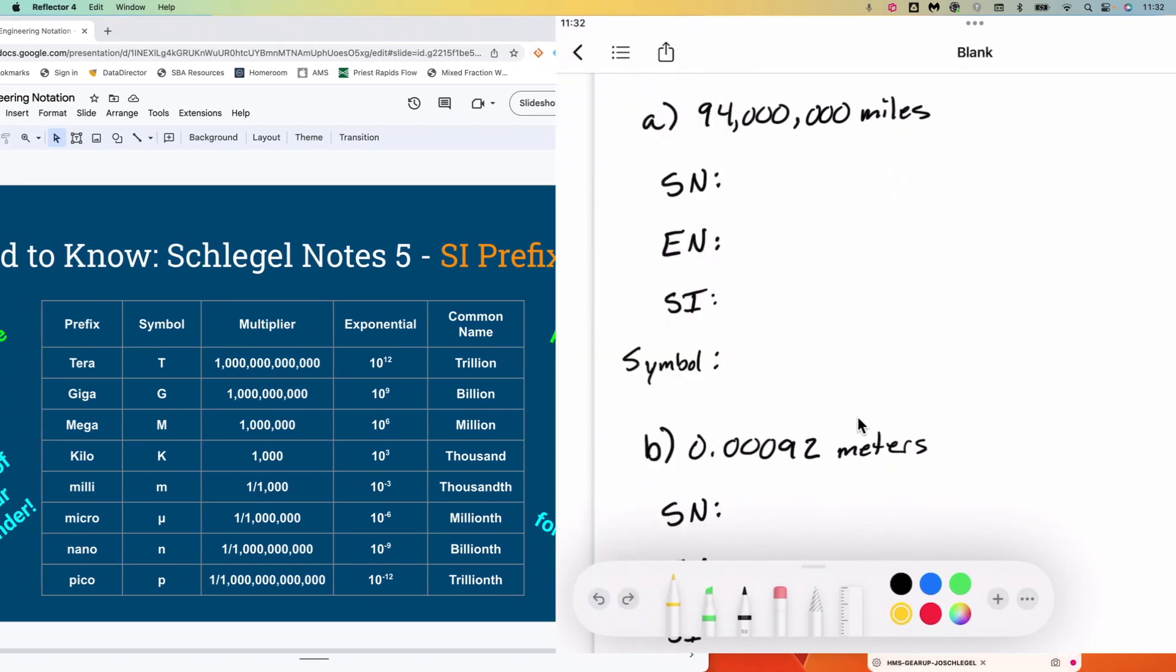Starting off here, we've got 94 million miles. Just a quick refresher on scientific notation. For scientific notation, we would have our decimal point here, and we would move it to the left until we only have one number in front of the decimal. We move in counts of one. So one, two, three, four, five, six, seven.